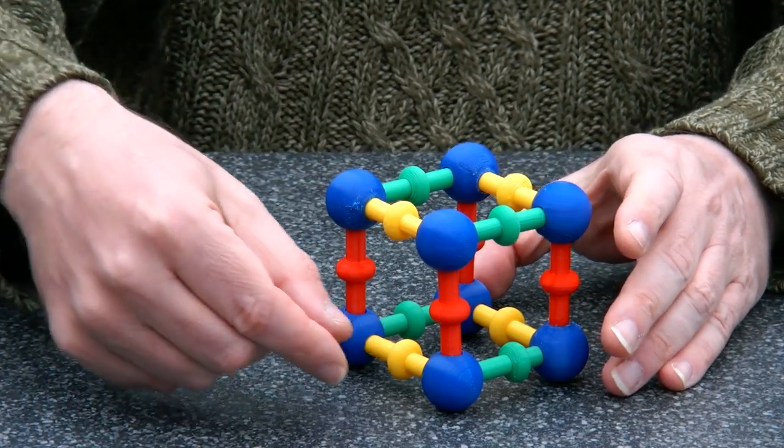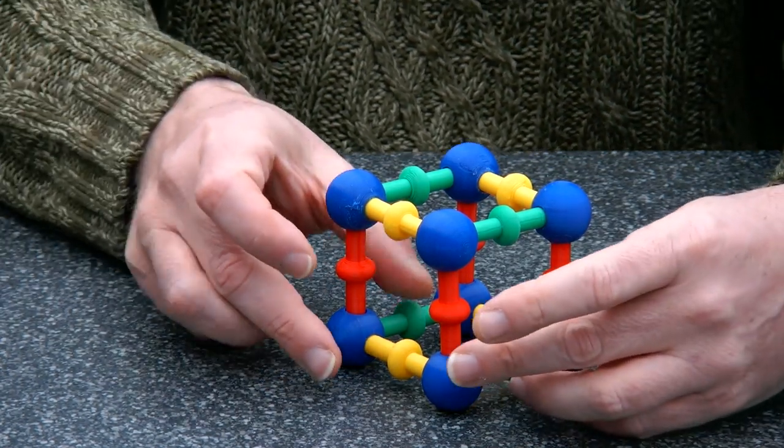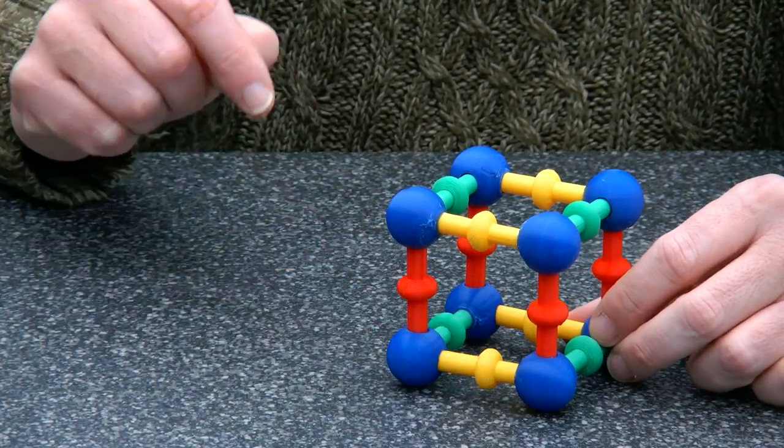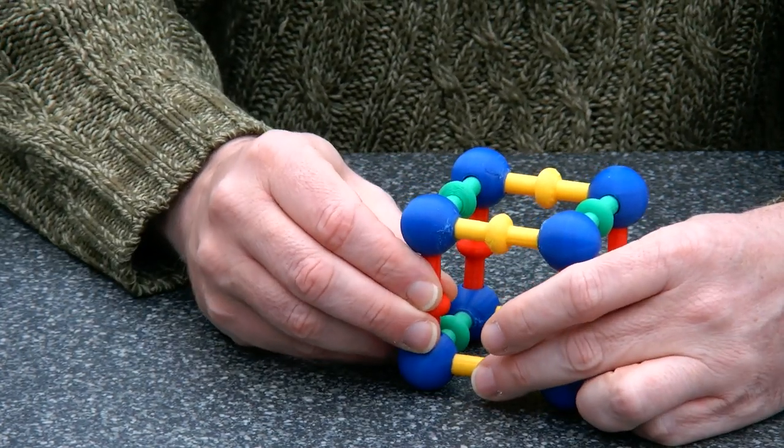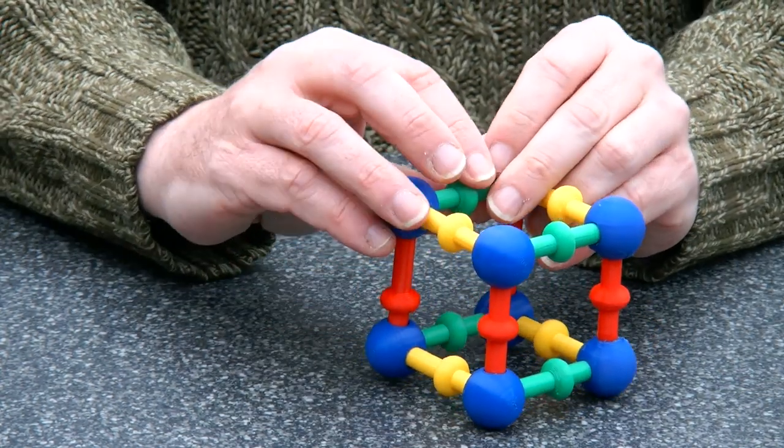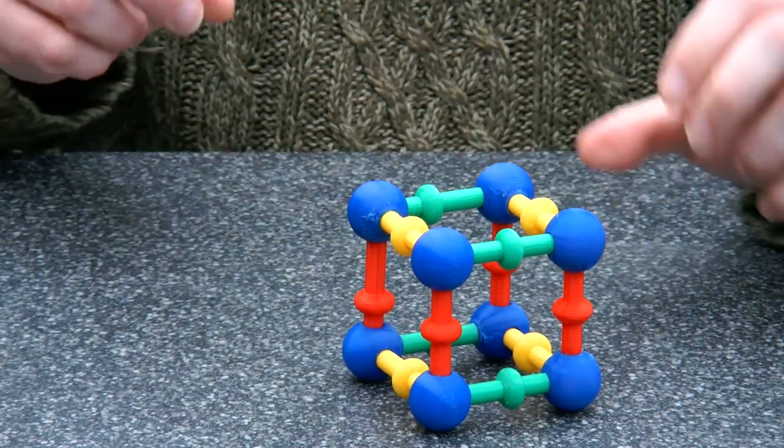But all the other rods can slide up and down. So the first move is you need to slide the yellow rod slightly in. This frees the red rod to slide down. This frees the green rod here on top to slide over the red rod.